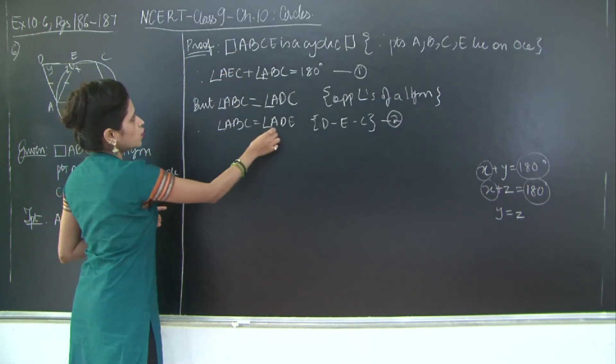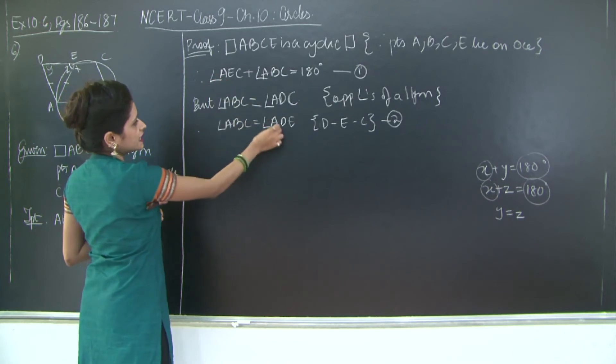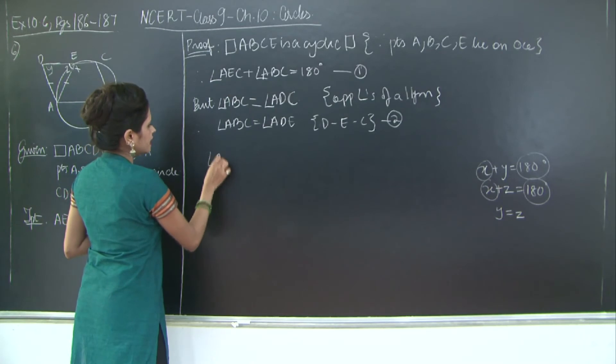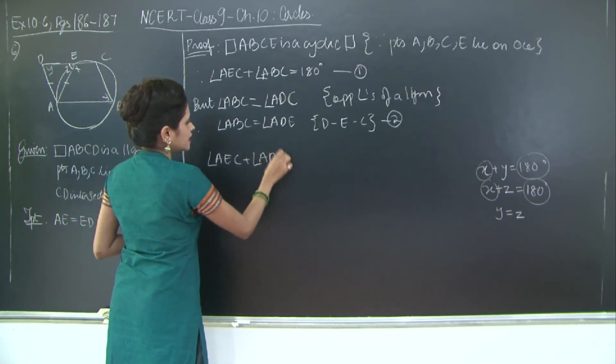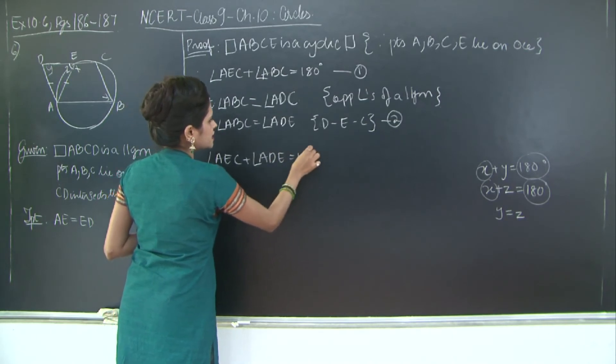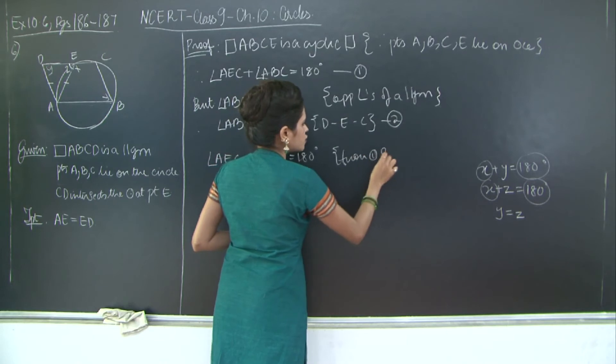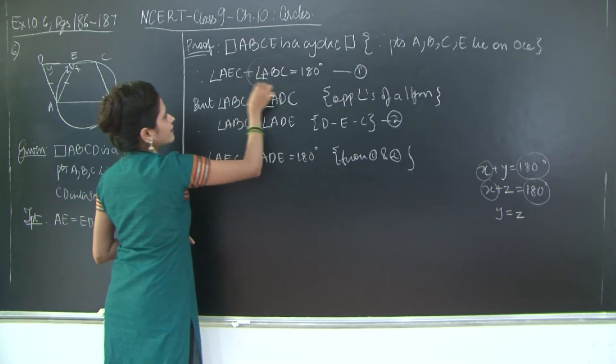Now from one and two what do you get? That AEC is equal to, AEC plus ADE is equal to 180 degrees. I will say from one and two. Why 180 degrees for AEC plus ADE? Because here you have ABC and here you have ABC.